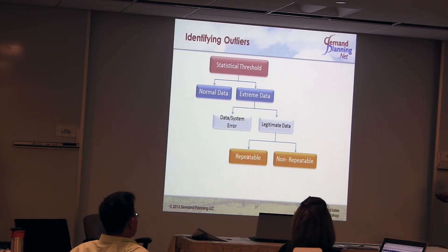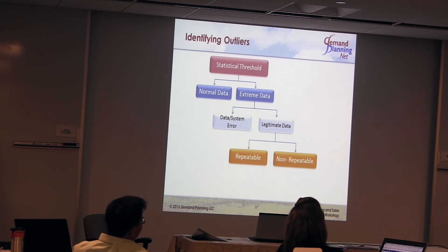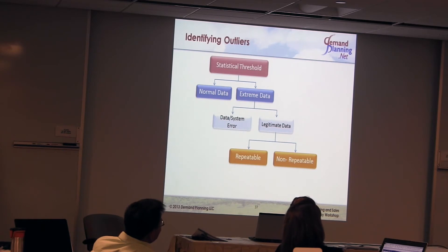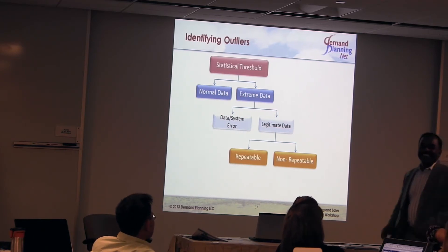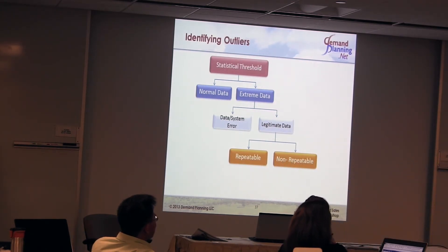It could be non-repeatable because that one particular month, your competitor had a huge logistics issue. They just implemented SAP and they didn't know where their inventory was, so they couldn't sell anything. They had a hiccup with their ERP system and didn't know where inventory was — they couldn't ship, all orders were cut. Suddenly the demand for your products spiked up and went through the roof.